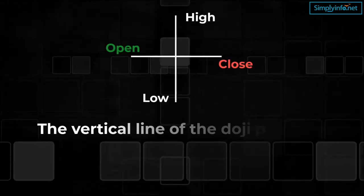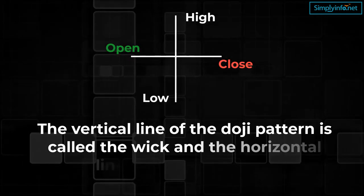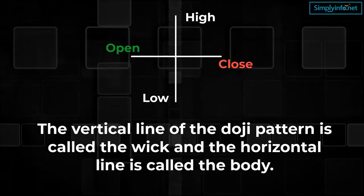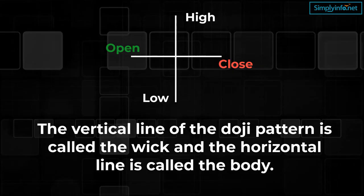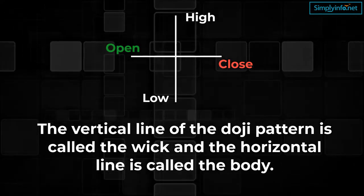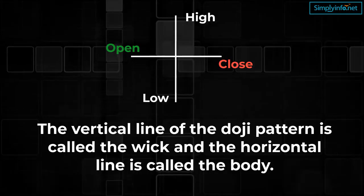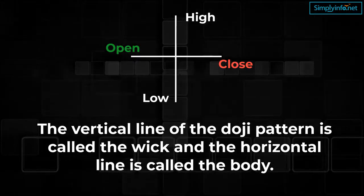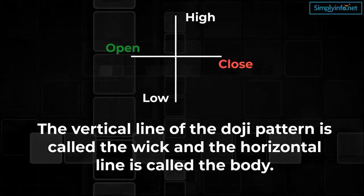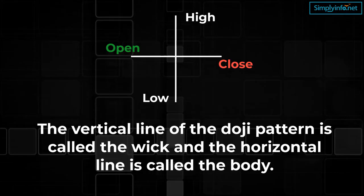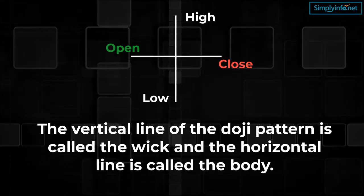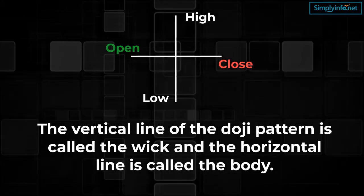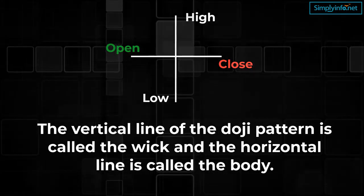The vertical line of the doji pattern is called the wick and the horizontal line is called the body. The wick can vary in length as the top represents the highest price and the bottom represents the low. The body represents the difference between the opening and the closing price. This can vary in height but not in width.